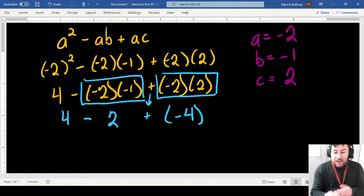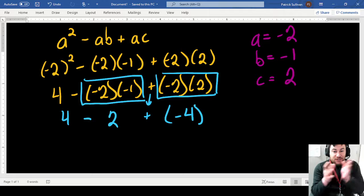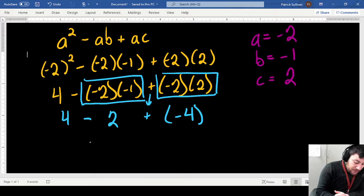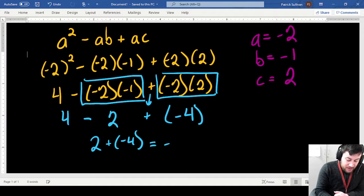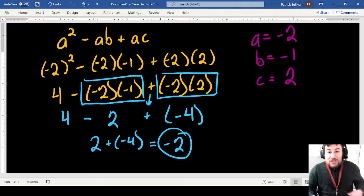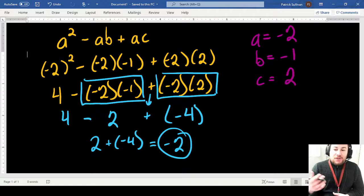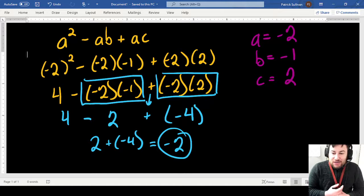I bring down my addition sign, I'll put that in parentheses. Now I'm doing, again, order of operations left to right. 4 minus 2 is positive 2, bring down the plus minus 4. And 2 plus negative 4, 2 minus 4 is equal to negative 2. So those are two examples of how you can solve, or simplify rather, an algebraic expression when you are given the values of the respective variables.